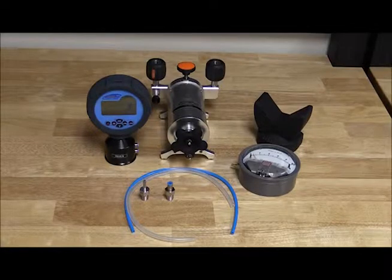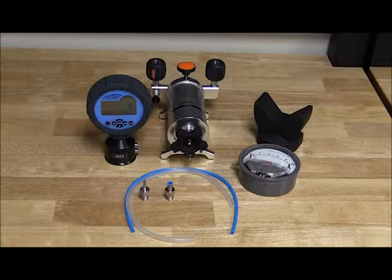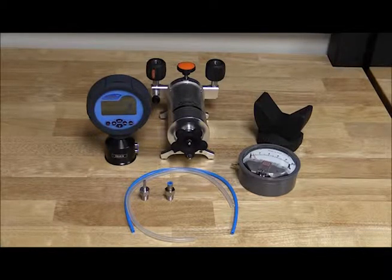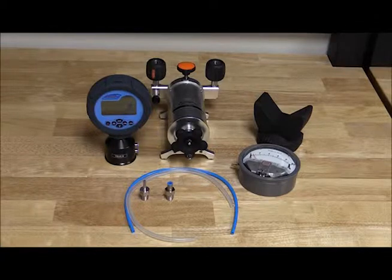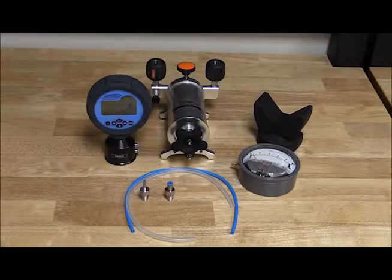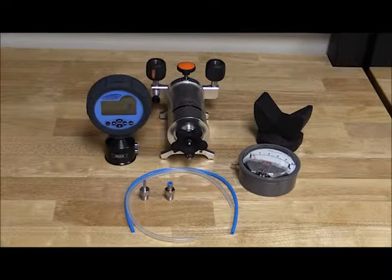In this example, we will use an Additel 901 pump to generate the pressure. The Additel 681 differential gauge will be used as our accurate reference, and we will be calibrating a magnehelic differential gauge that is 0-10 inches of water.